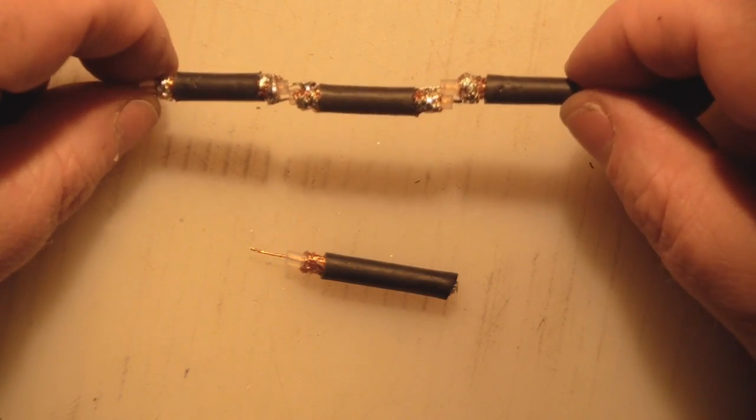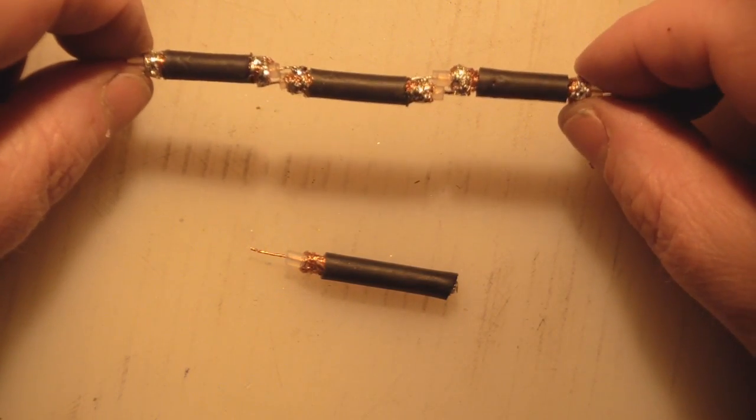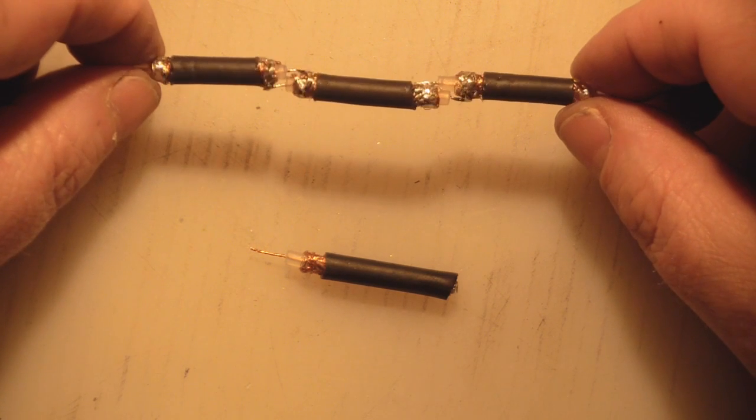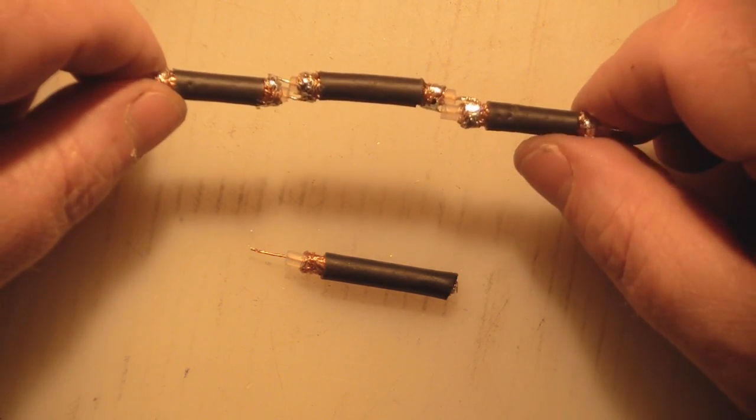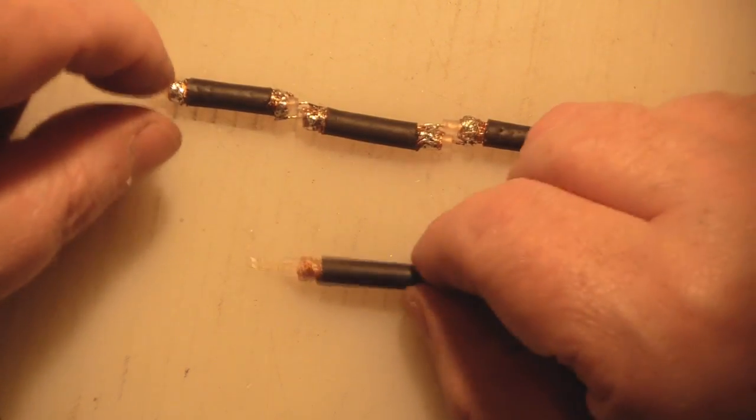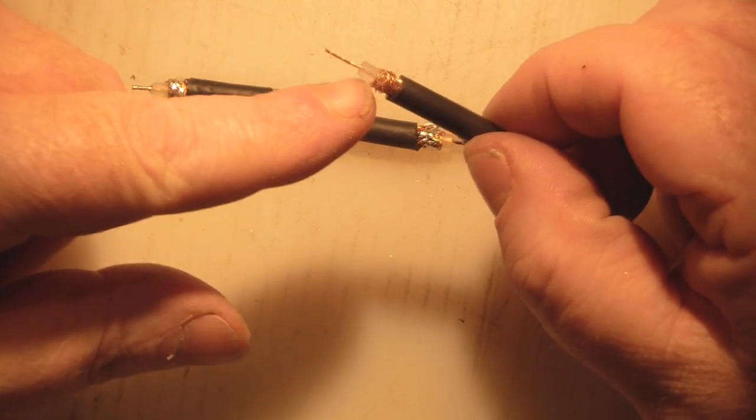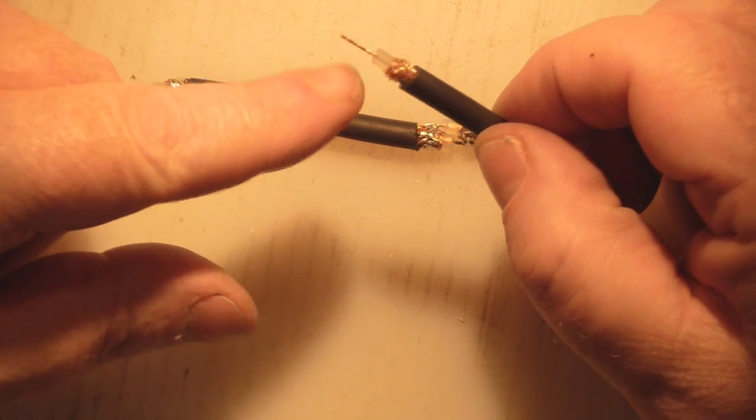So what I've done, I've just taken some scrap coax and stripped and I've soldered together how you would normally construct one of these coax antennas. What you do is you strip away some of this outer core, leave it exposed there a couple of millimeters.